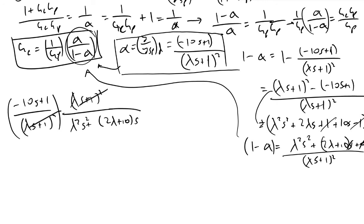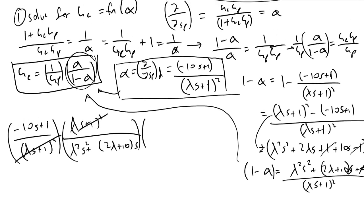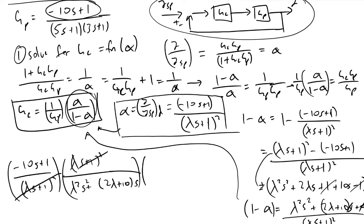These terms will cancel nicely. Now we will add in the 1 over gp. Because we knew gp from before, looking at the inverse of it, we'll have minus 10s plus 1, and in the denominator we have (5s plus 1) times (3s plus 1).